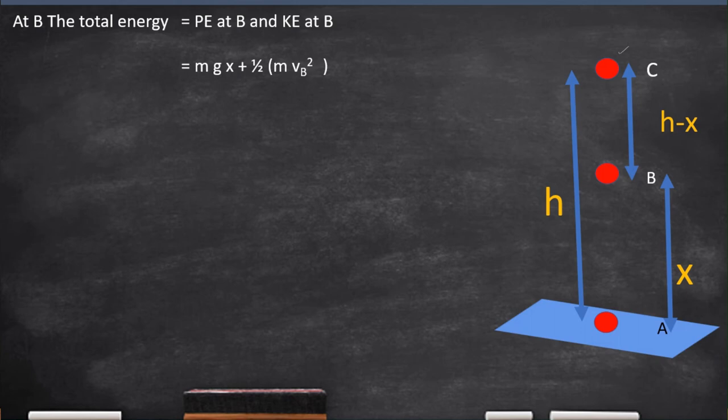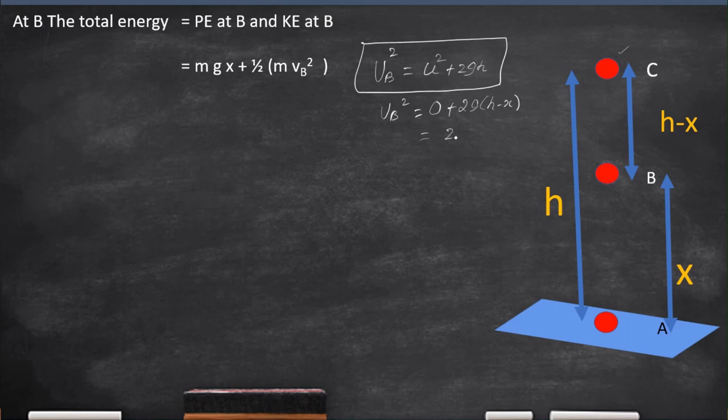Remember, B is an arbitrary point. We have not chosen any particular specific point. Now, potential energy of B can be written as Mgx and kinetic energy, which is equal to ½MvB². Now, to calculate vB², we use the same formula V² = U² + 2gh. In that, vB² = 0 + 2g(H-X), the height that it travelled. Now, we can say that it is equal to 2gh - 2gX.